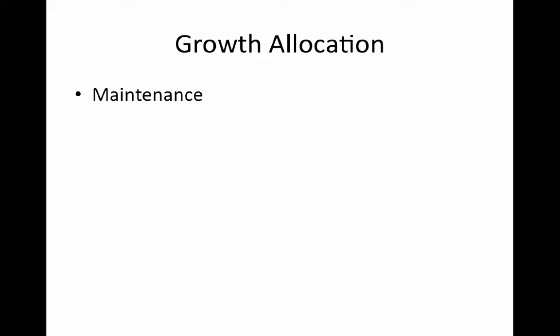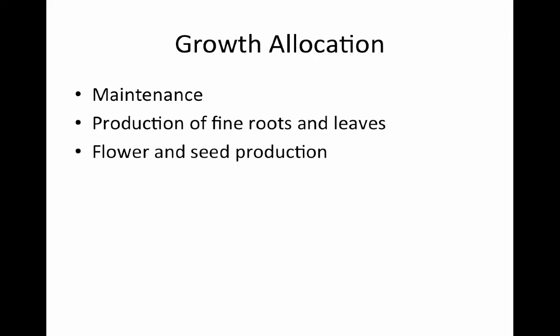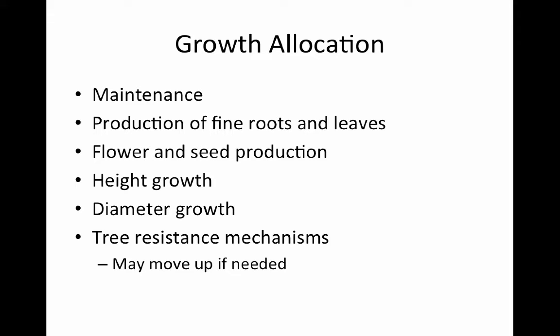From a previous lecture, we talked about how trees allocate growth. At the very basis, trees need to maintain — this is the minimum. If they don't do maintenance, they're not able to survive. Then they can move into production of fine roots and leaves, flowers and seed production, then height growth. Height growth comes before diameter growth. Trees also have resistance mechanisms, and this may move up in priority if needed — for example, in stressful situations such as insects or disease.